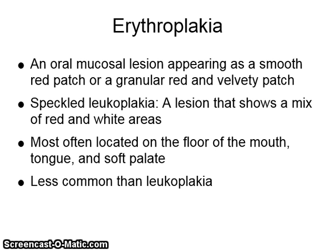Erythroplakia is an oral mucosal lesion appearing as a smooth red patch or a granular red and velvety patch. Speckled leukoplakia is a lesion that shows a mix of red and white areas. They are most often located on the floor of the mouth, the tongue, and the soft palate. Erythroplakia is less common than leukoplakia.